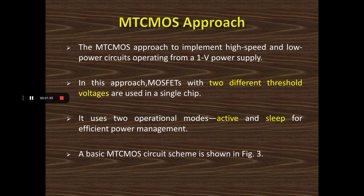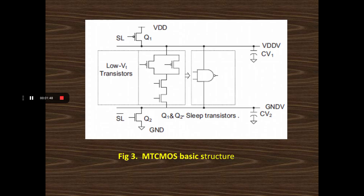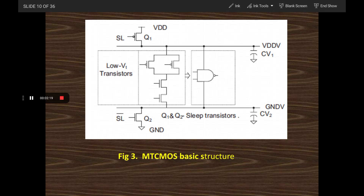Like VTCMOS, MTCMOS also has two modes: active mode and sleep mode. The basic circuit diagram for MTCMOS with a two-input NAND gate realization is shown in the figure. The internal part of this circuit consists of low VT transistors — the PMOS and NMOS transistors forming the NAND gate are low VT transistors. The top transistor is a PMOS and the bottom is an NMOS; these two transistors are called sleep transistors and have a high VT.